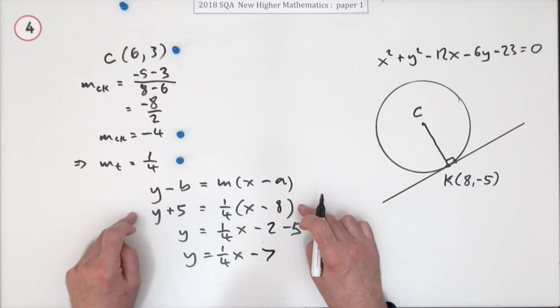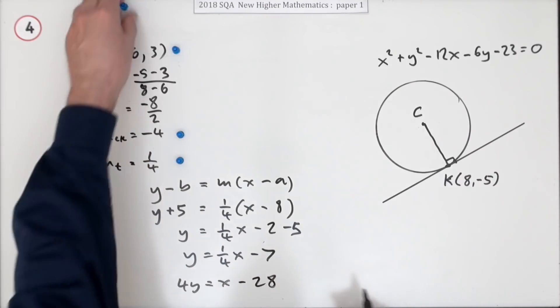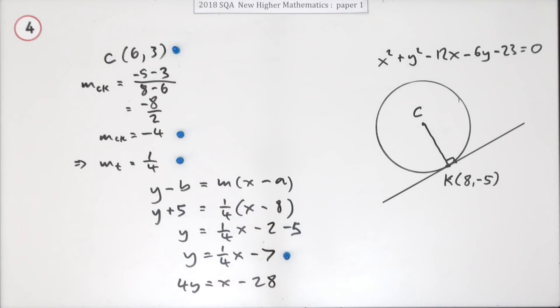If you didn't like that, of course, at any point you could change into any other form. You could change it just by multiplying them by four to begin with. You'd have 4y = x - 28, but that's actually quite a handy one when you've got it in the form of y = mx + c, as long as there's not too many fractions there.